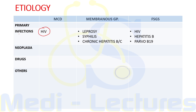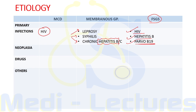Chronic infections like leprosy, syphilis, and chronic hepatitis B and C will cause membranous glomerulopathy. It is important to note that membranous glomerulopathy is the most common lesion seen in hepatitis B. For focal segmental glomerulosclerosis, infections that can cause it include HIV, hepatitis B, and parvovirus B19.